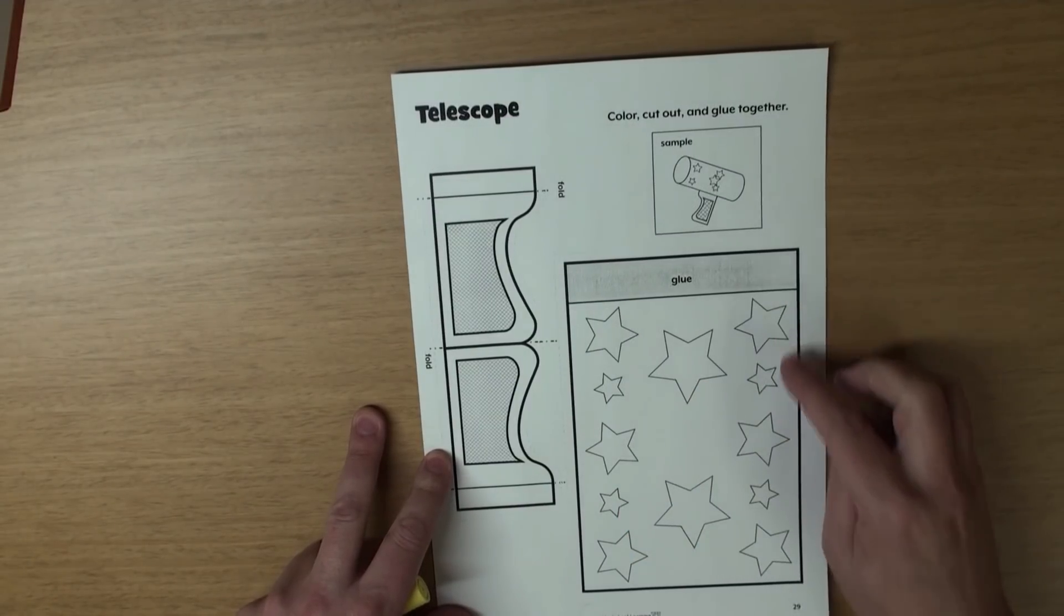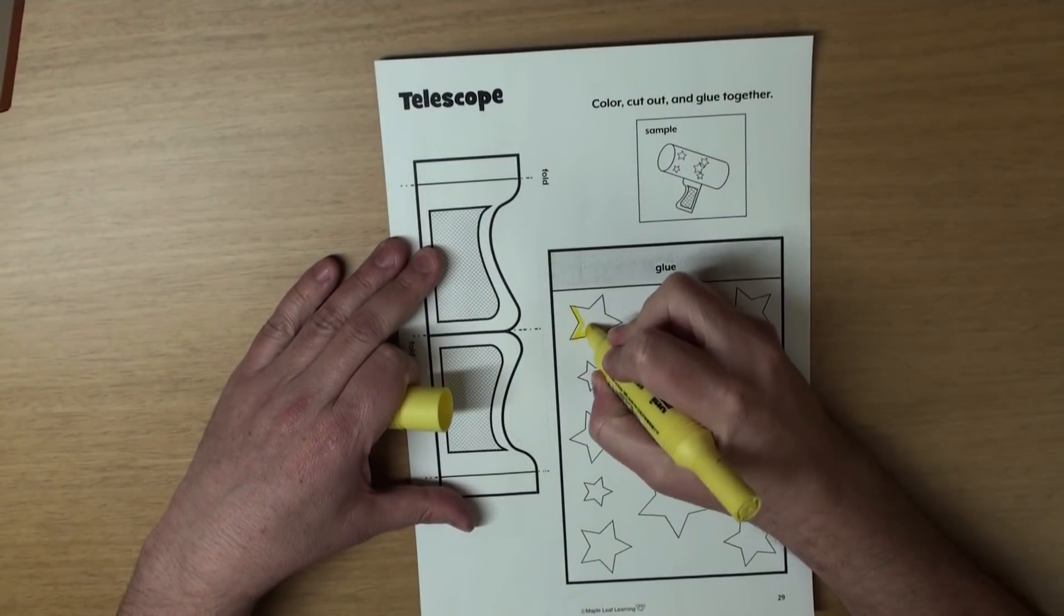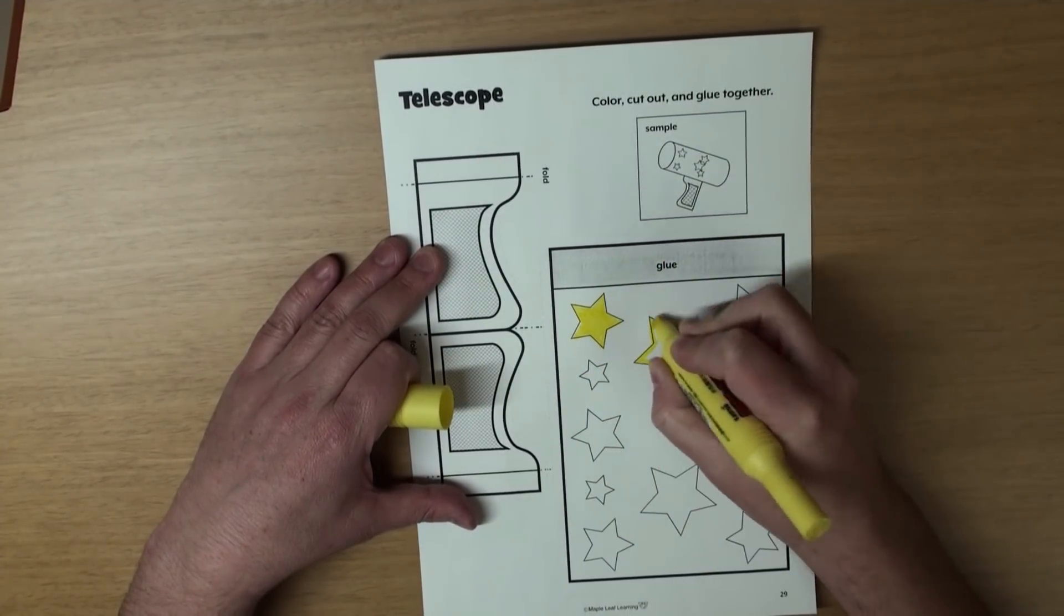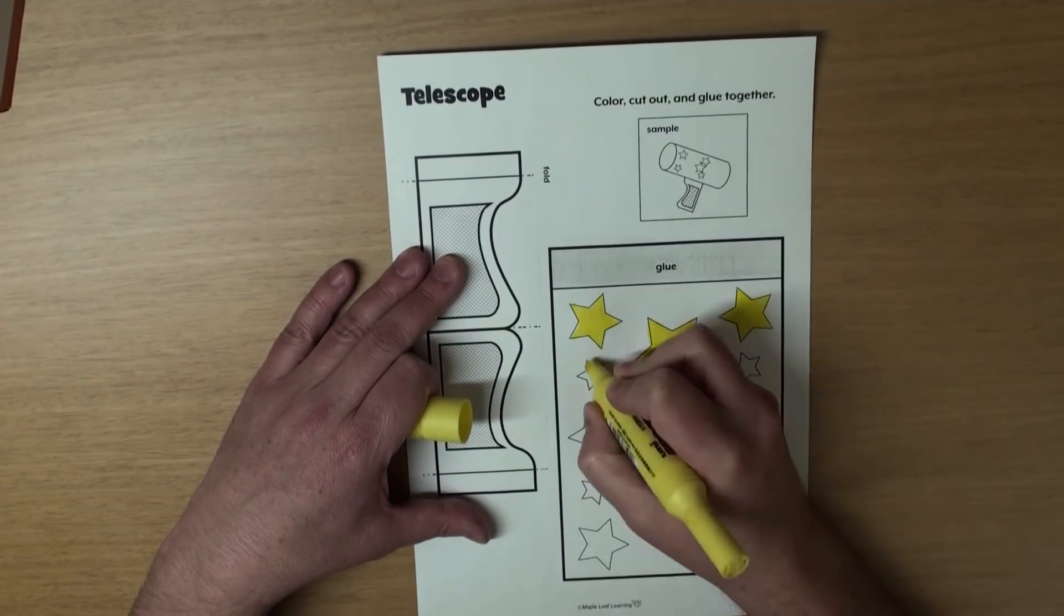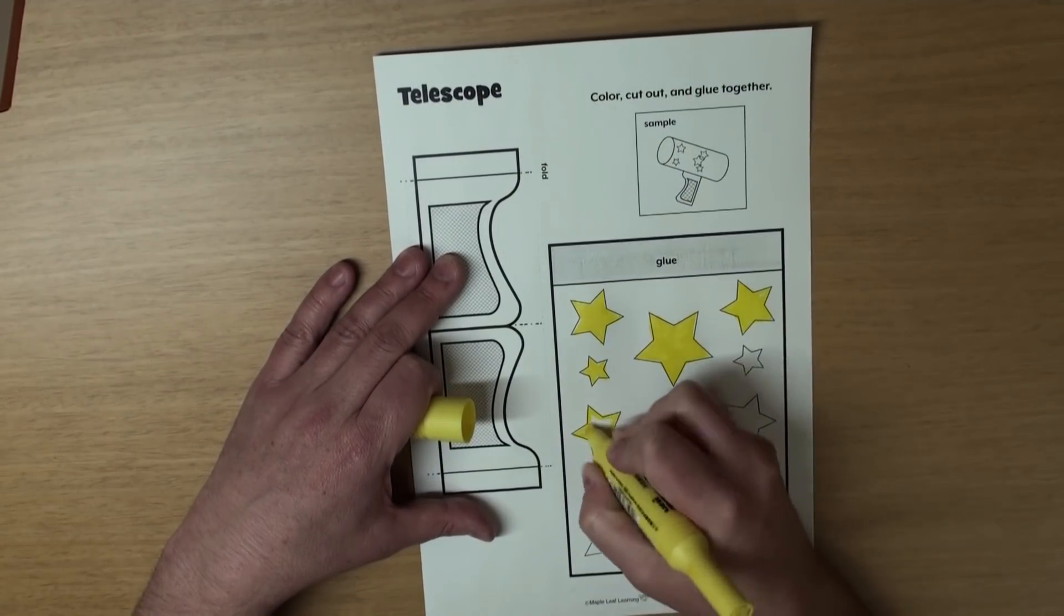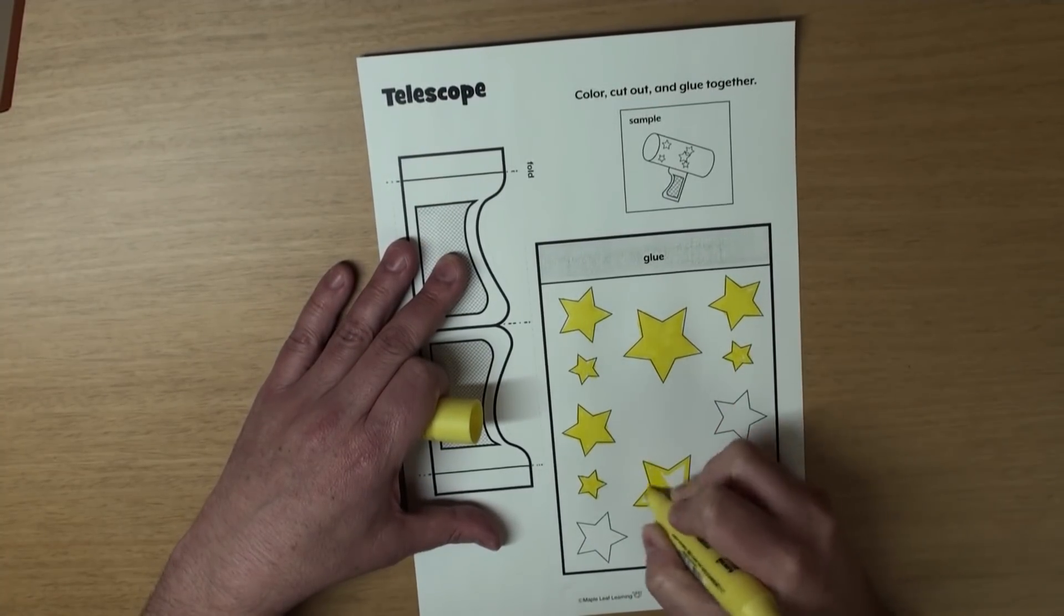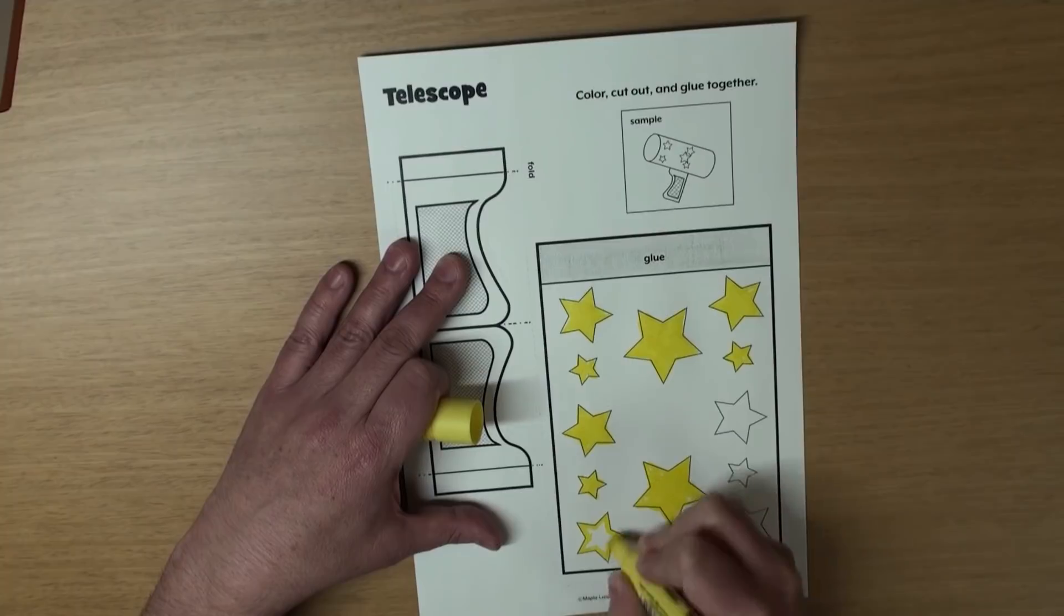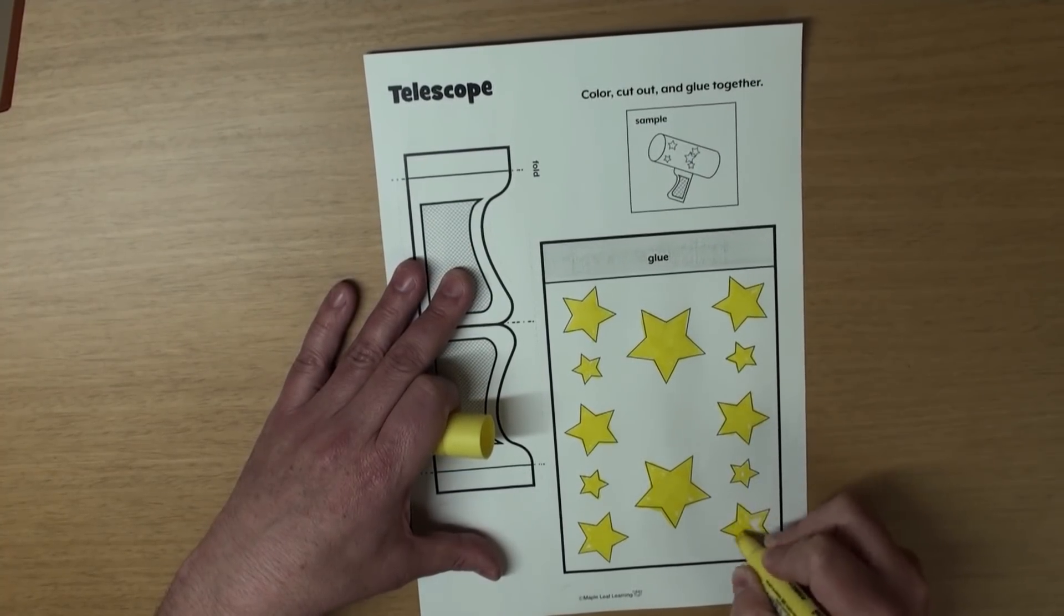So first we have some stars. And what color are stars? That's right! They're yellow. One, two, three, four, five, six, seven, eight, nine, ten, eleven, twelve. Great!